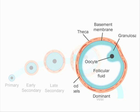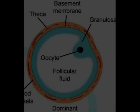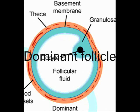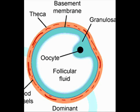At around the 10th day of the follicular phase, one of the follicles becomes distinctly larger than the others. It continues to grow, becoming larger and larger to become mature — this is then called the dominant follicle. While the growth of the others is arrested, these eventually die out.